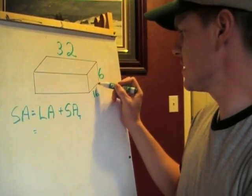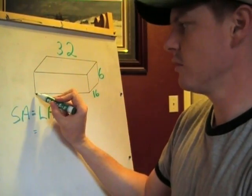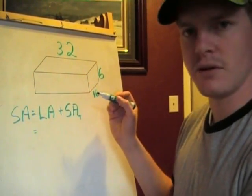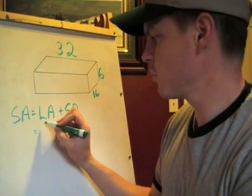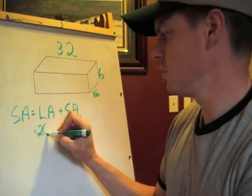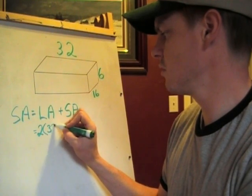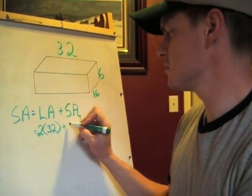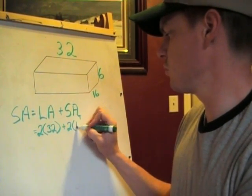So, I have 16, 32, 16, and 32. All right? So, my perimeter is equal to 2 times the length plus 2 times the width.